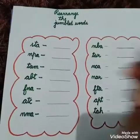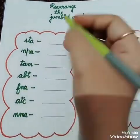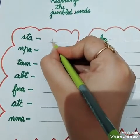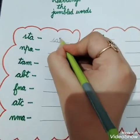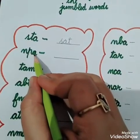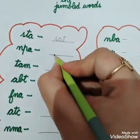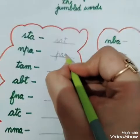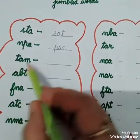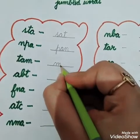So now we will write these jumbled words. First word is S-T-A. We will write S-A-T. Next: N-P-A. The correct word is P-A-N. Next: T-A-M. The correct word is M-A-T.